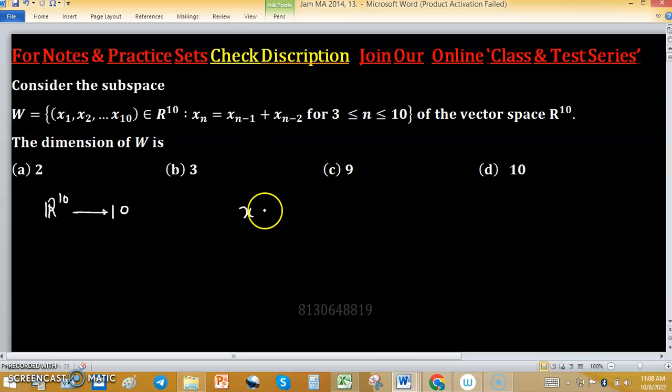The condition in compact form is written as x_n = x_(n-1) + x_(n-2), and this is true for n belonging to the range 3 ≤ n ≤ 10.